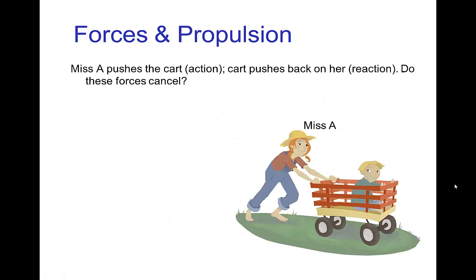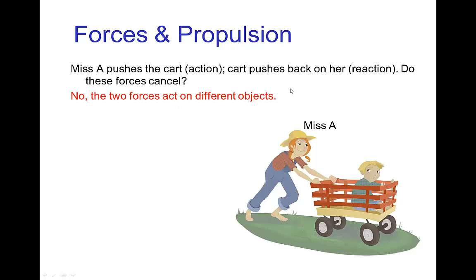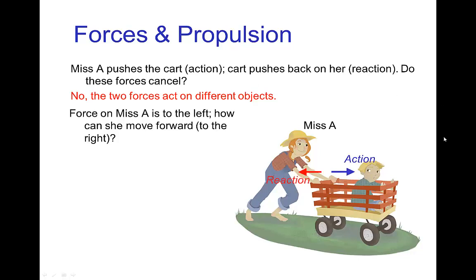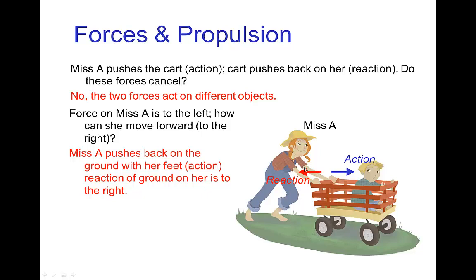Let's look at a situation where Miss A is pushing a cart with her little brother inside. She's pushing on the cart — let's call that the action — and the cart pushes back on her. Those two forces are equal and opposite, but they don't balance, because the two forces are acting on different objects. The first one acts on the cart, and the reaction acts on her. The reaction force on her is pushing her toward the left, so how is it possible for her to move toward the right? There must be other forces acting on her.